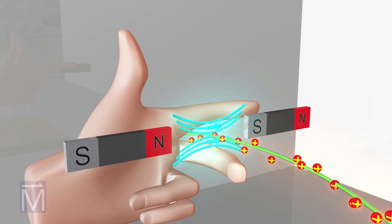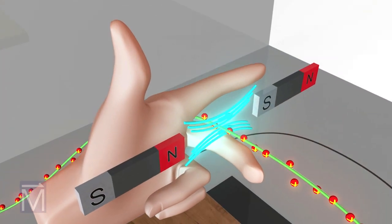When charged particles enter a magnetic field, the field exerts a force on them. You can use your hands to find out the direction of that force.